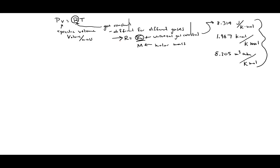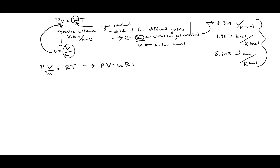Now let's look at some other forms of the ideal gas law. The specific volume is defined as volume over mass — little v equals big V over m. So we can replace the specific volume in the equation: P times big V over m equals RT, which is normally written as PV equals MRT.